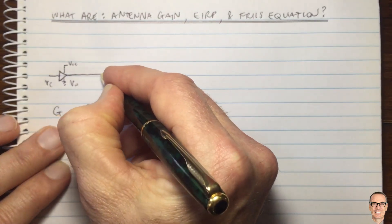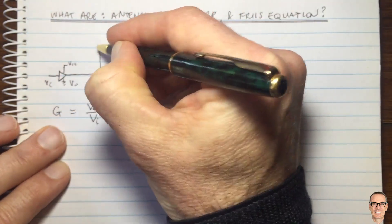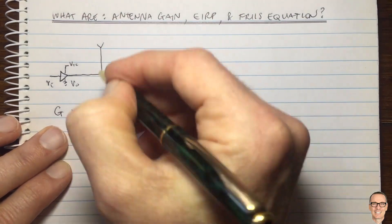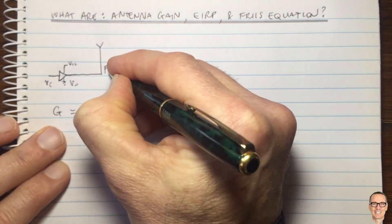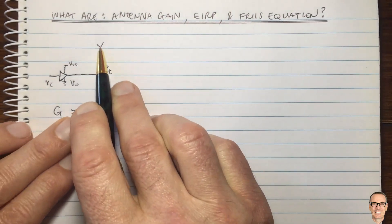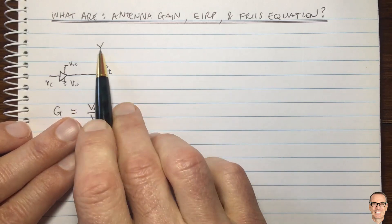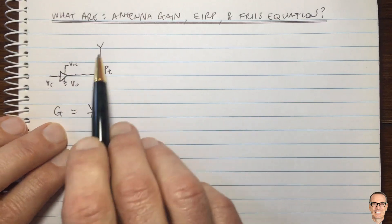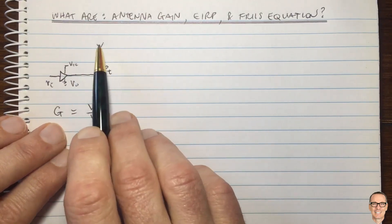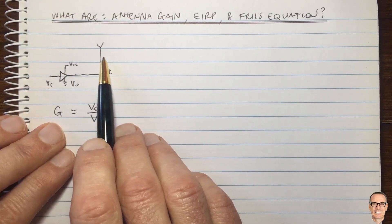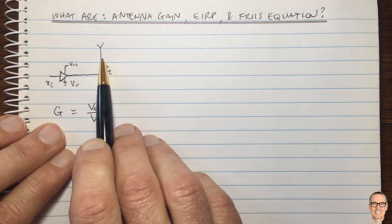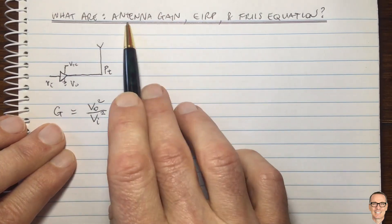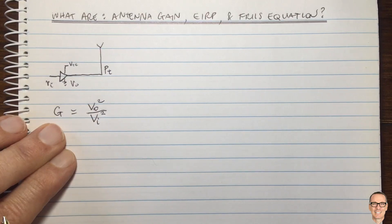What about when it comes to antennas? It's a bit less intuitive. In this case we've got the transmitted power PT and we have a passive device — so where does the gain come from? An antenna doesn't have a power supply; it's just a piece of metal radiating electromagnetic waves. So what is the gain of this antenna and how do we define it?